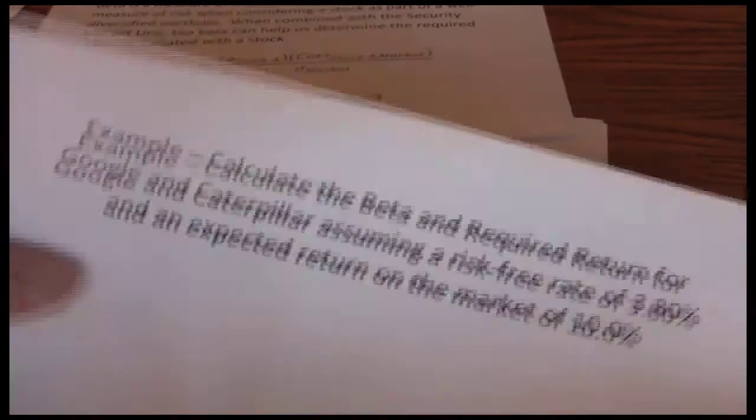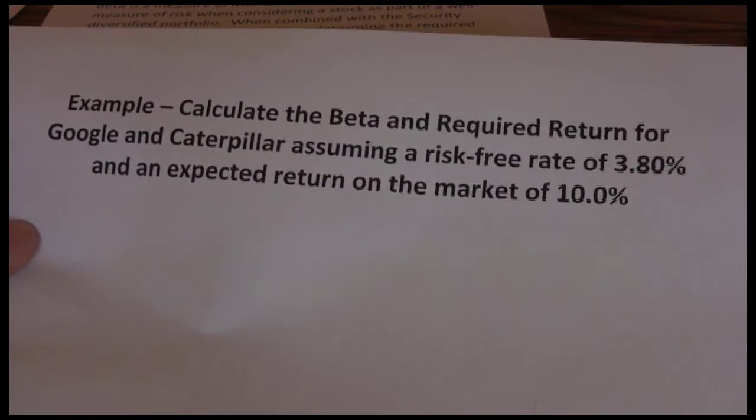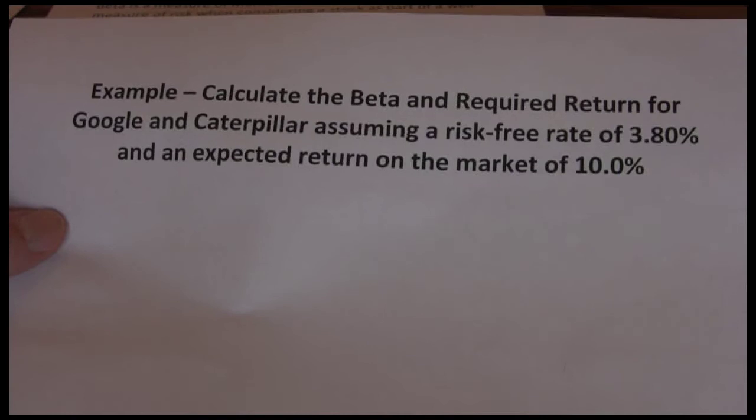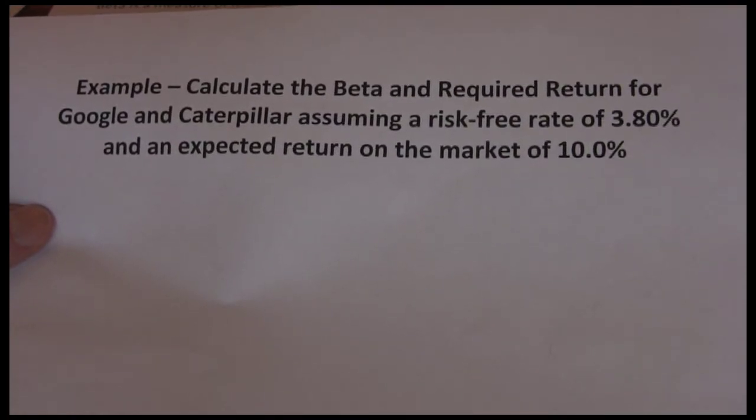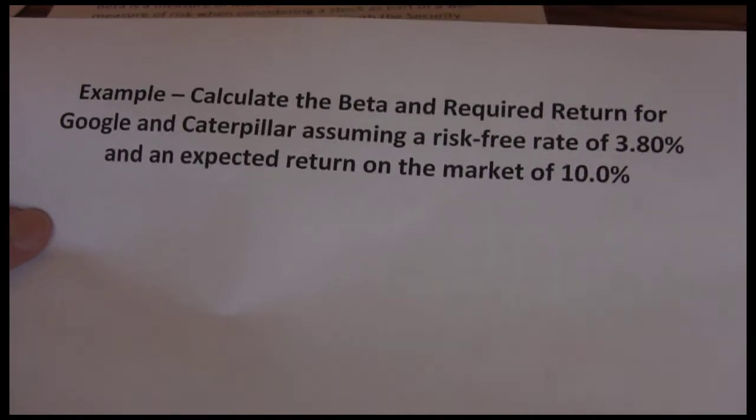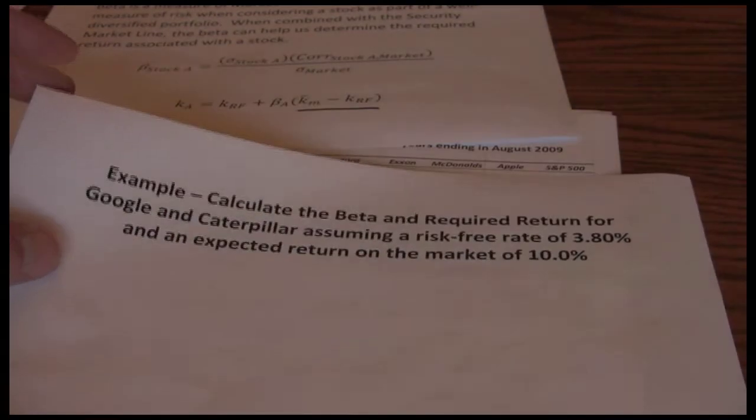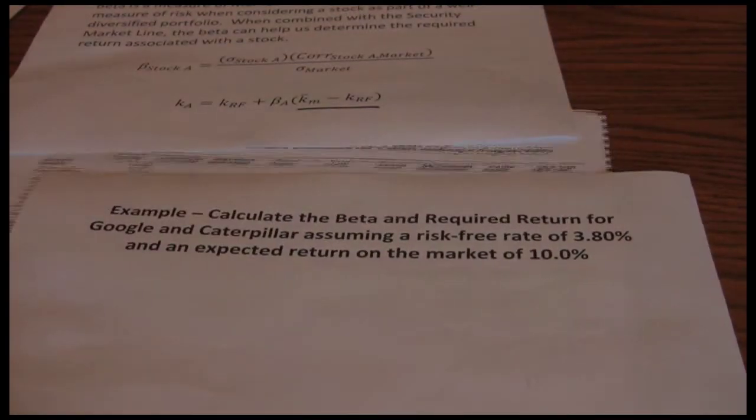Let's walk through an example. We want to calculate the beta and the required return for Google and Caterpillar assuming a risk free rate of 3.8% and an expected return on the market of 10%. So let's go ahead and look at our data.